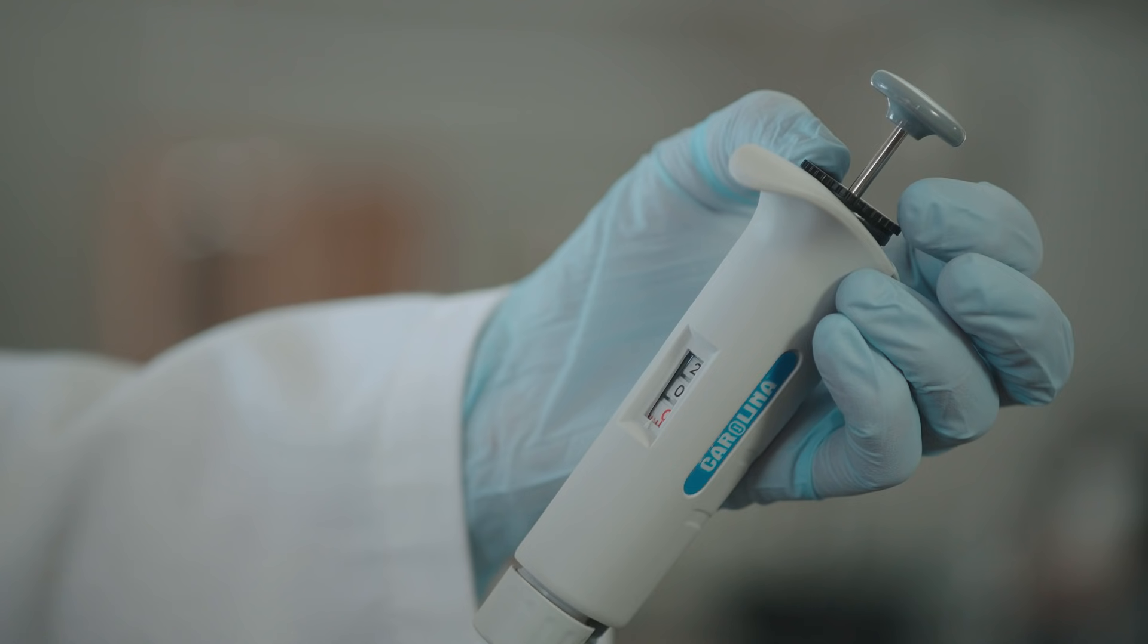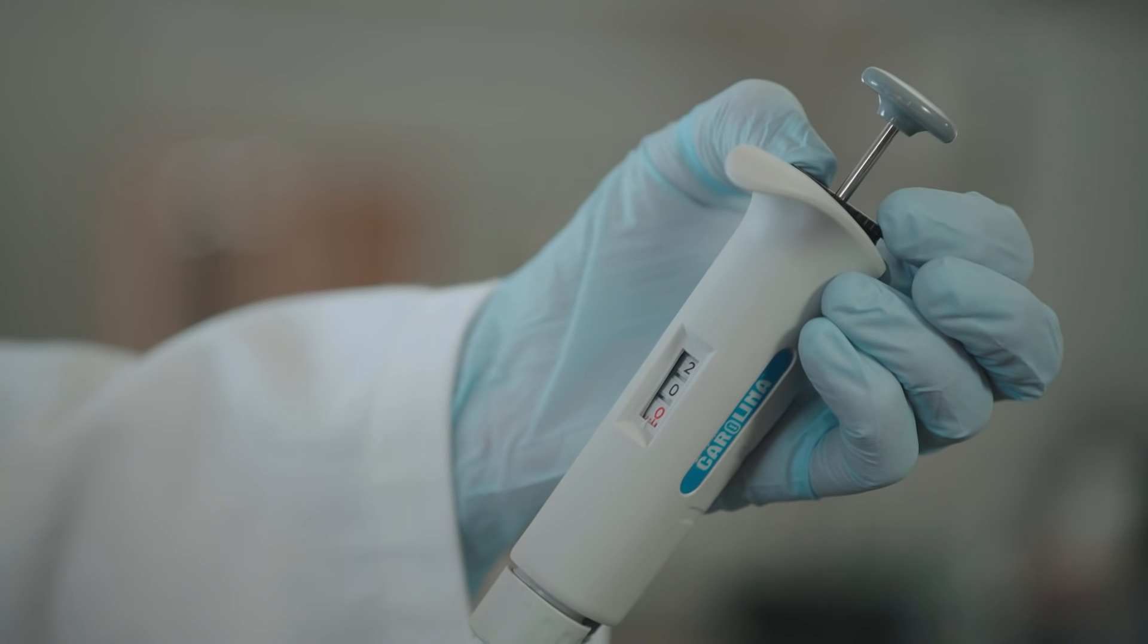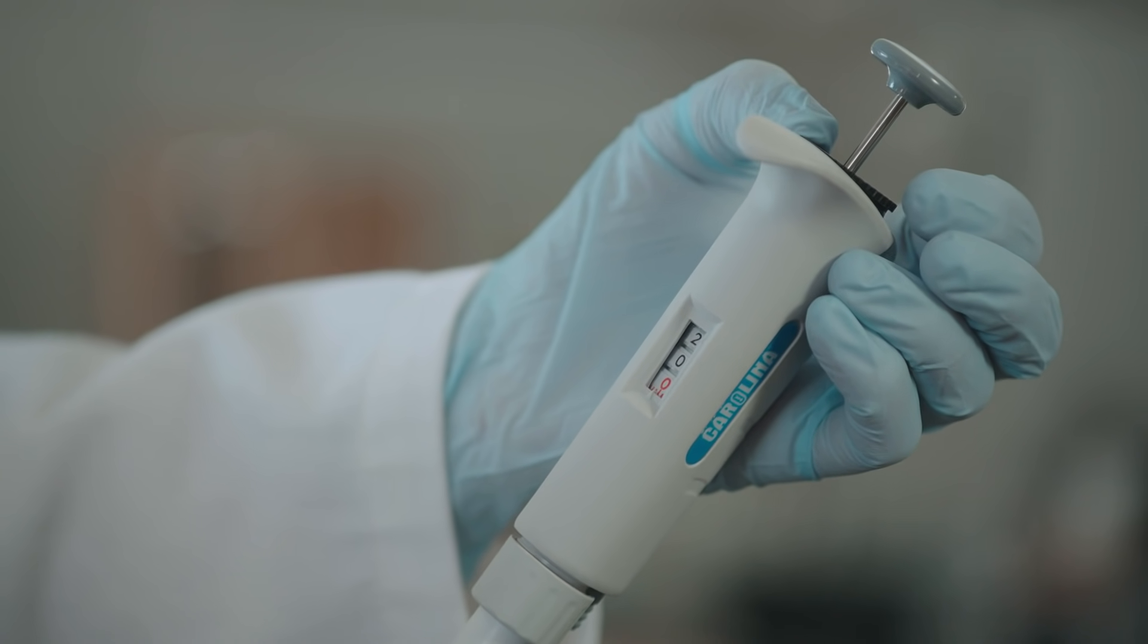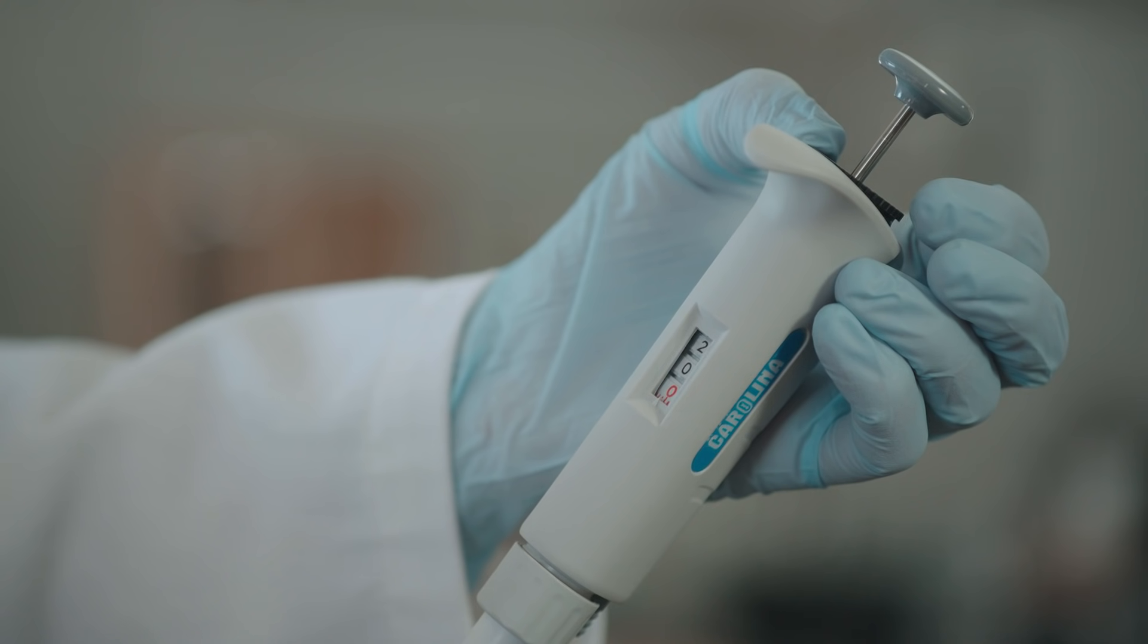Once you have finished adjusting the pipette volume, push the black wheel back into its original position. Never adjust the pipette volume outside of the volume range it is designed to measure. This damages the micro pipette.